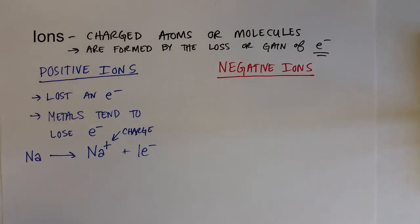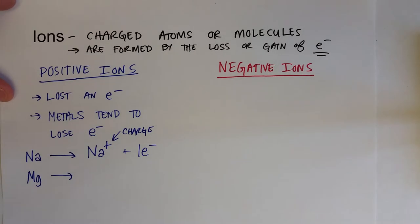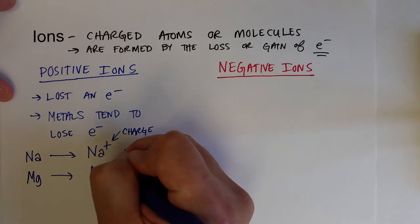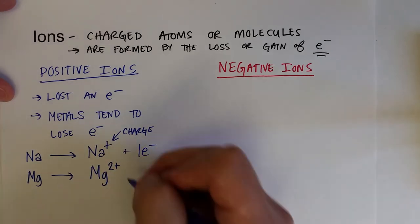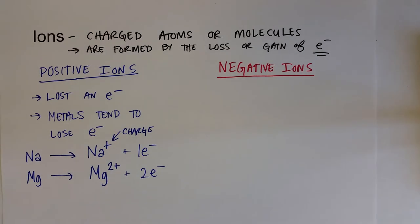Atoms can lose more than one electron, such as magnesium. Magnesium usually loses two electrons to form a two-plus positively charged ion.